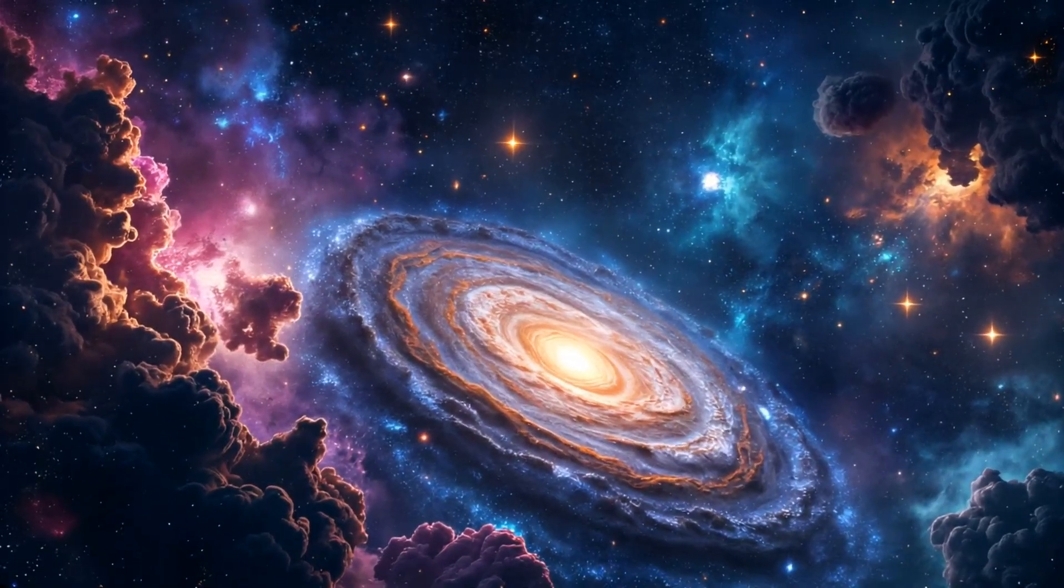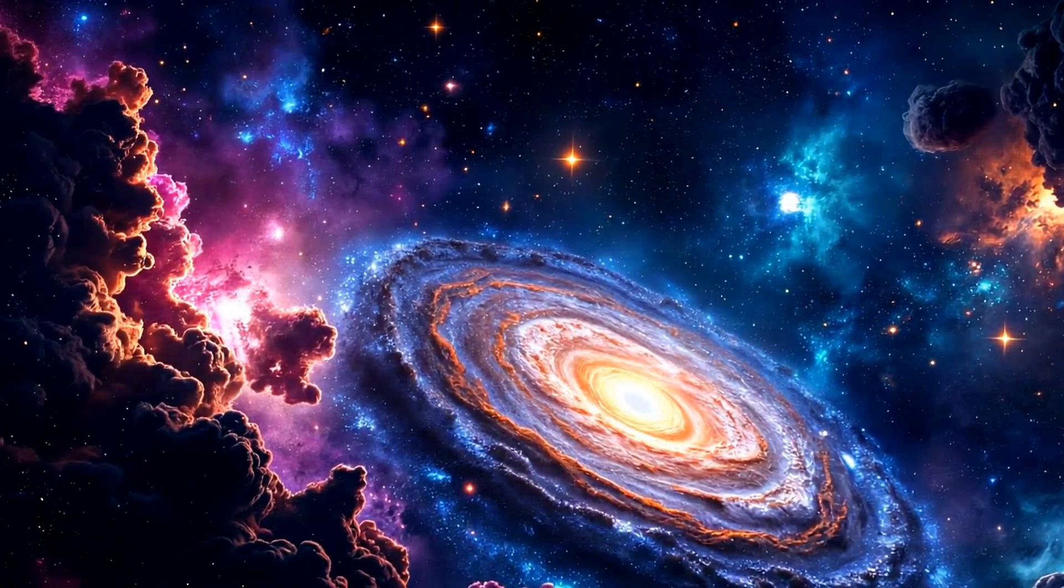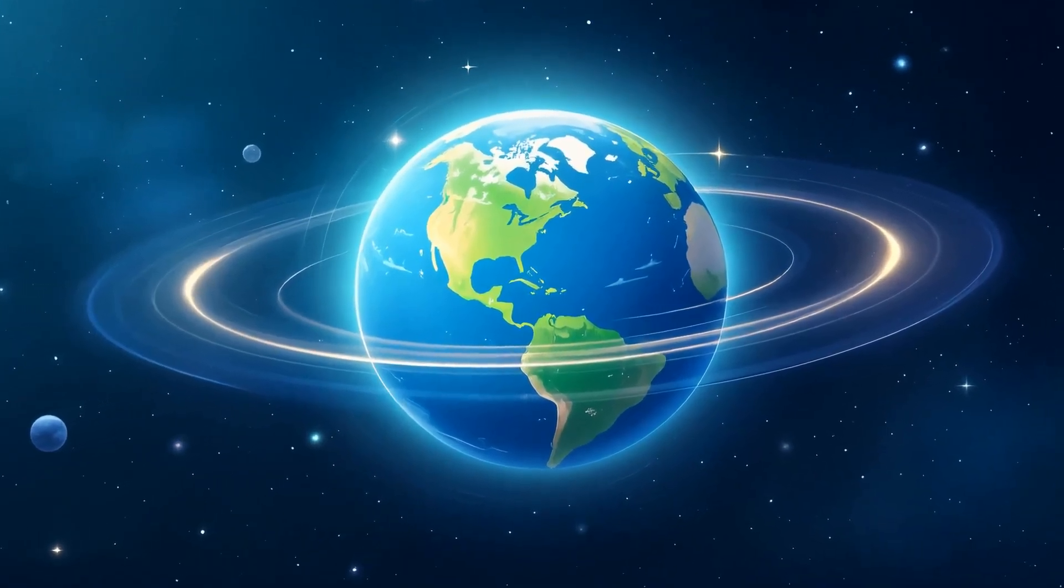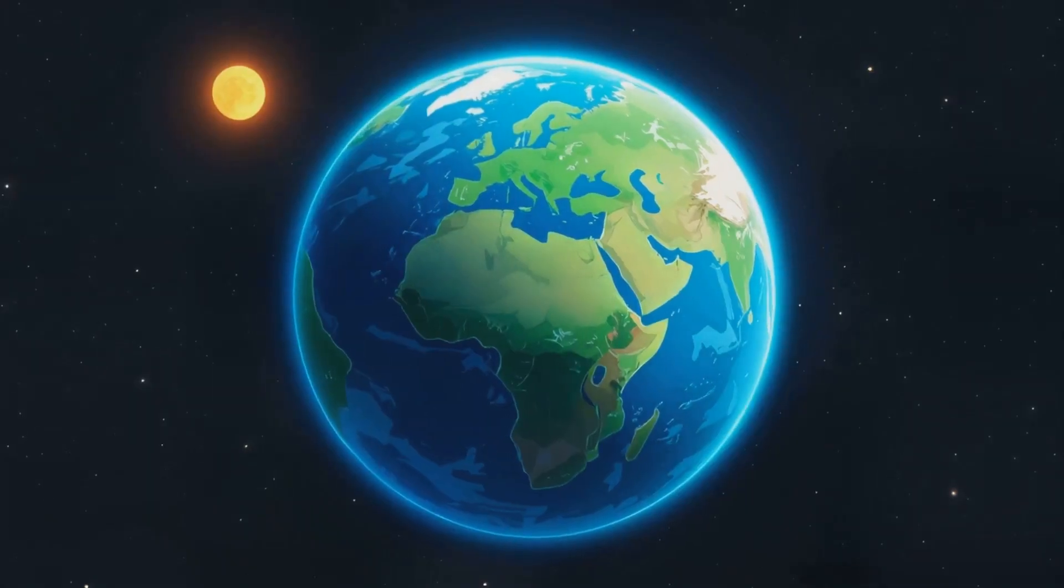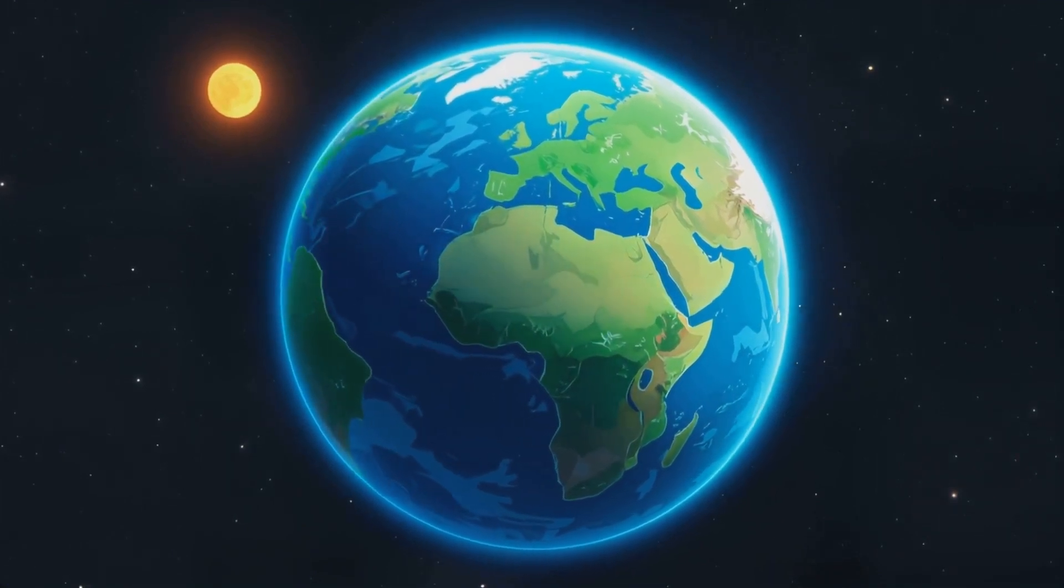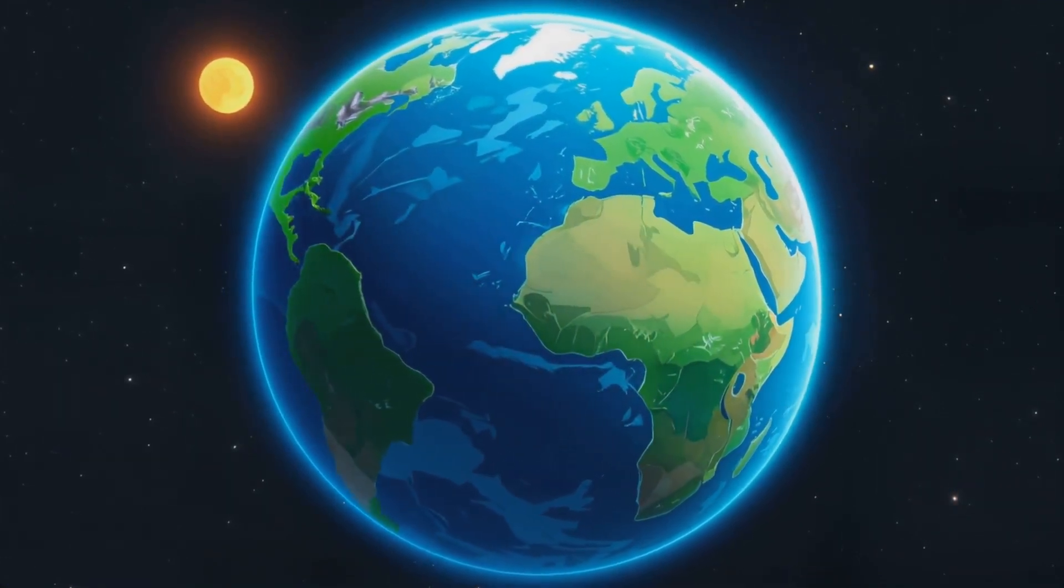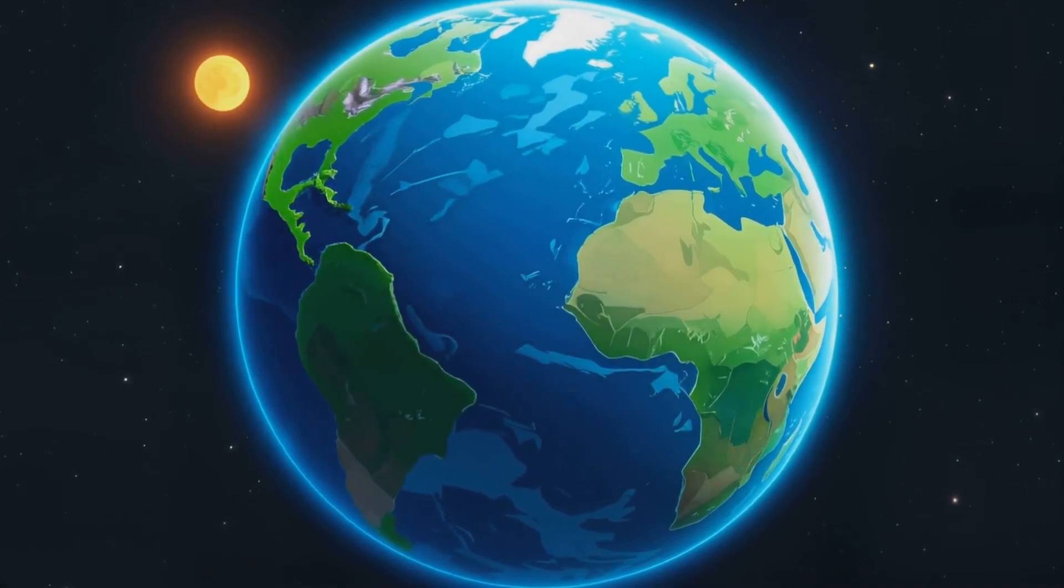To understand where we are, Hawking walks us through our evolving view of the cosmos. For much of history, we believed everything revolved around us. Then came Copernicus, who proposed that Earth orbits the sun. Galileo confirmed it with his telescope and Kepler refined it with mathematical laws of motion.